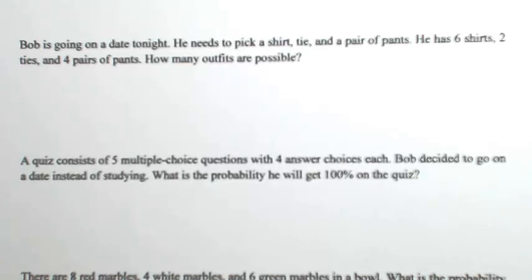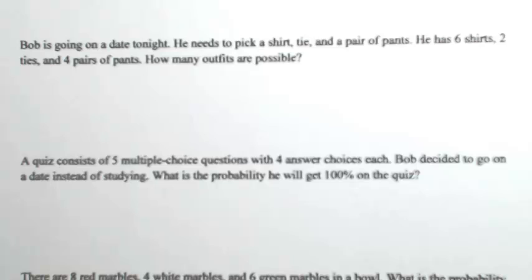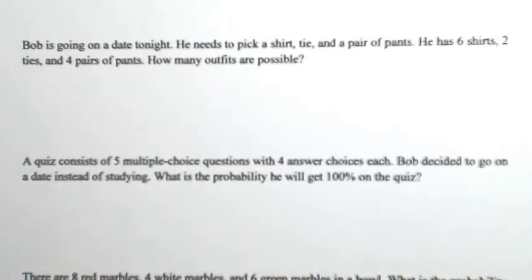Bob is going on a date tonight. He needs to pick a shirt, a tie, and a pair of pants. He has six shirts, two ties, and four pairs of pants. Based on that, how many outfits are possible?